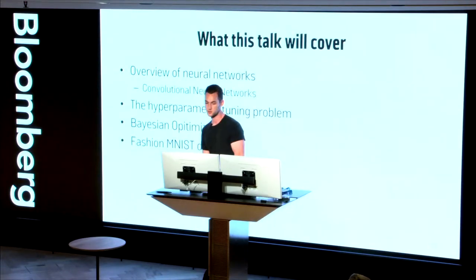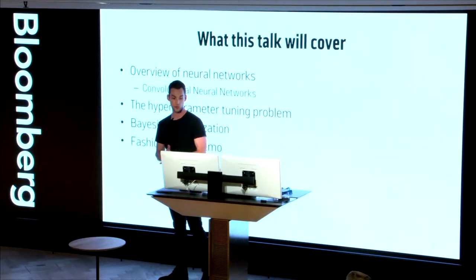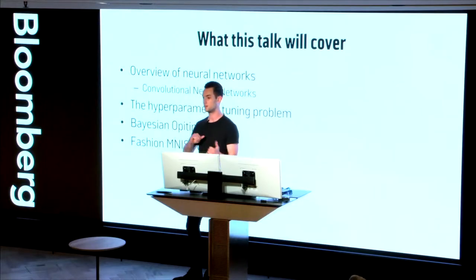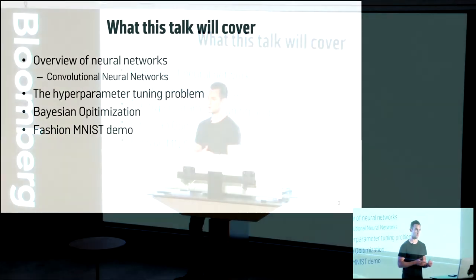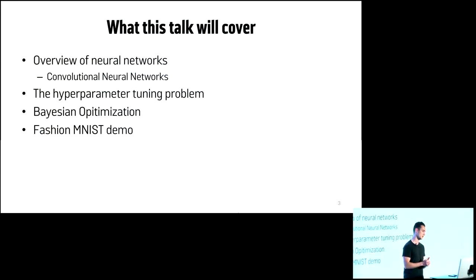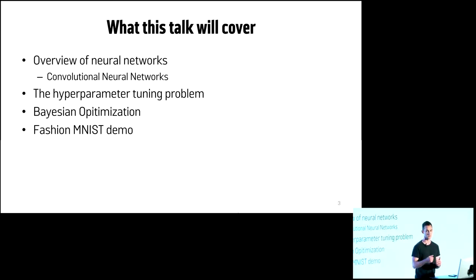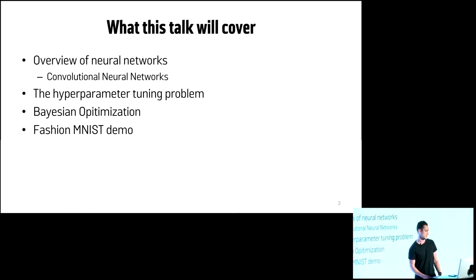So what I want to go through today: we'll cover a brief high-level overview of what neural networks are, then a deeper dive into convolutional neural networks and how we can use those, then how we can tune those models using Bayesian optimization, and hopefully a demo of how we can implement that in Python.